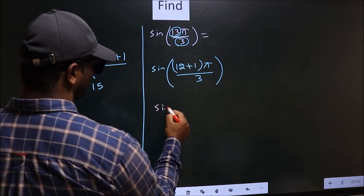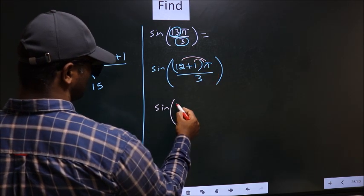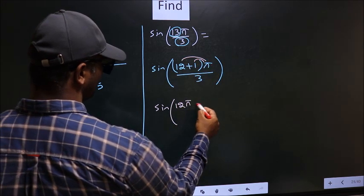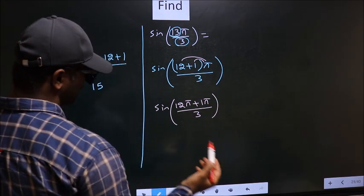Now you should open up the brackets in this way. So you get 12π plus 1π by 3.